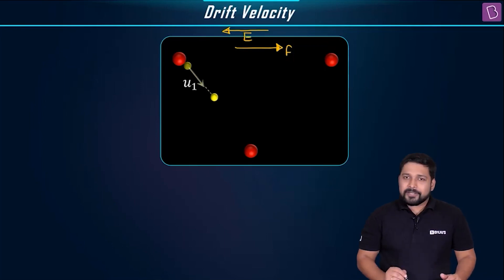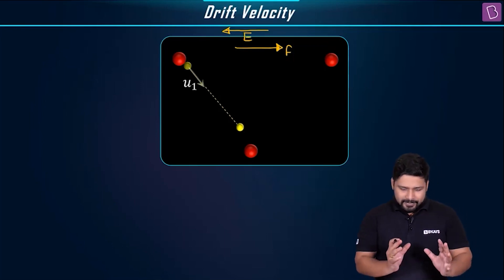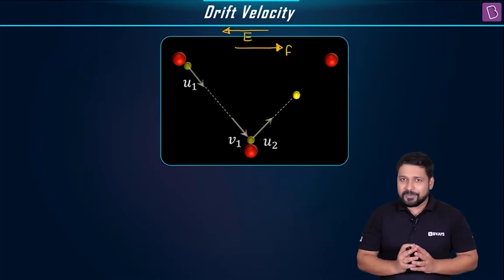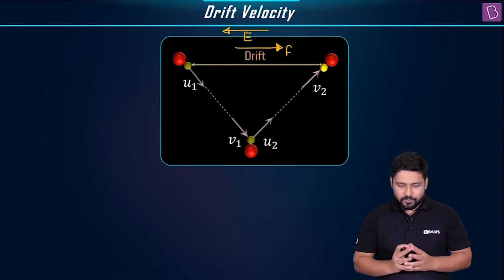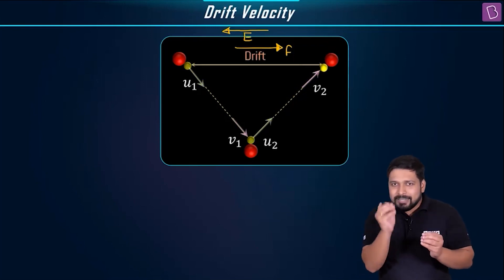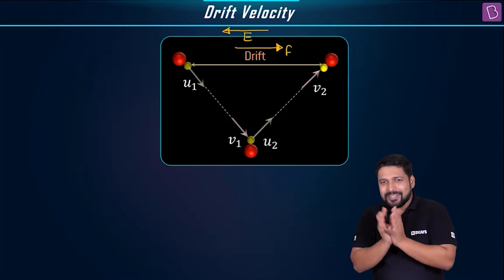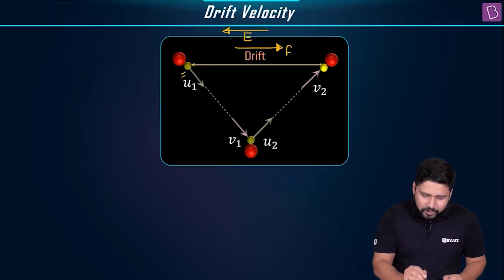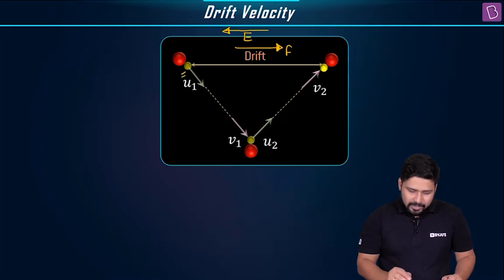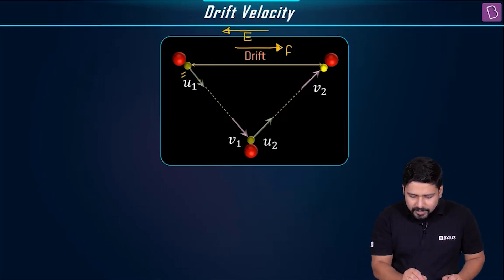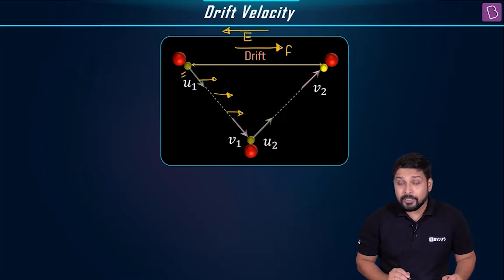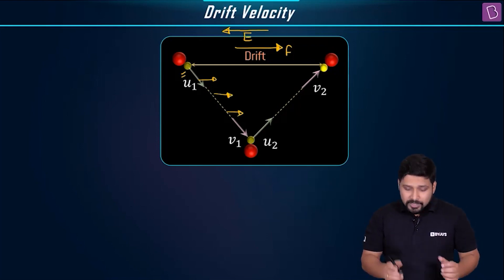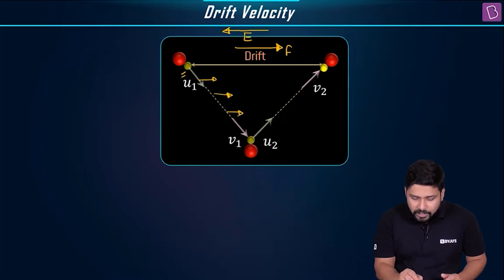The motion is still random overall, but it is drifting slightly. Let us say it was moving with thermal velocity U1. As it moves, it always experiences the force in this direction, so there is an acceleration, which means the velocity will change to V1.